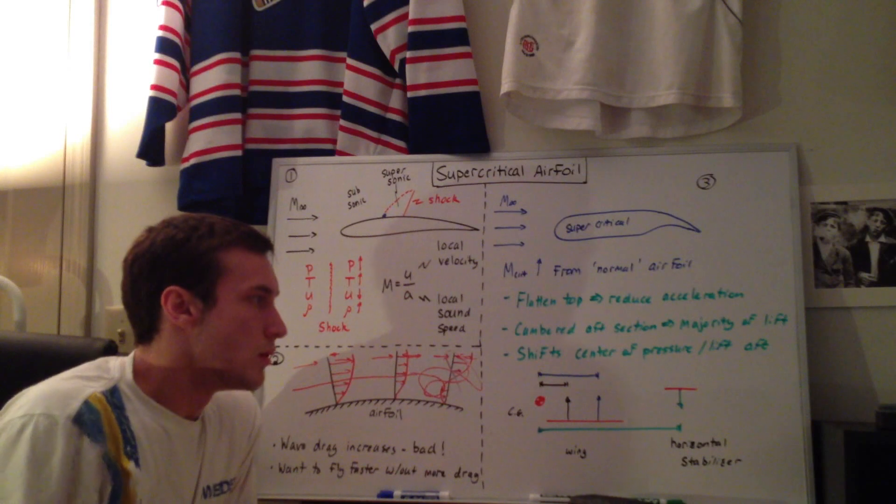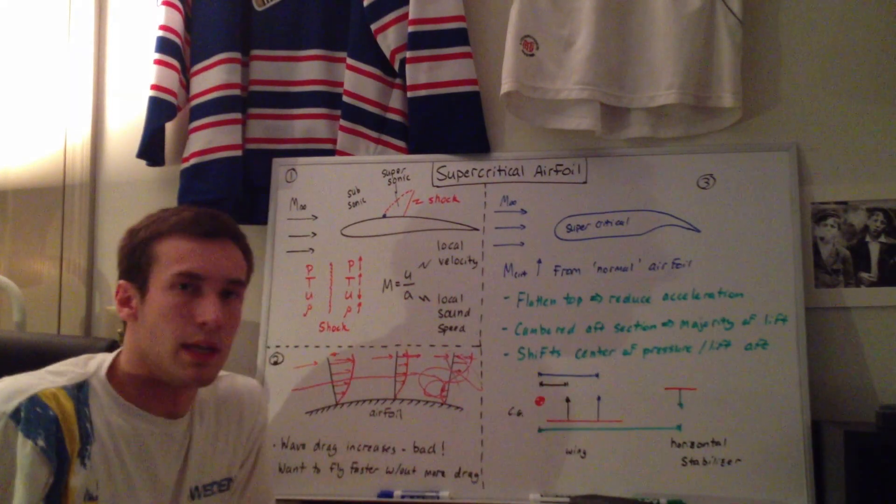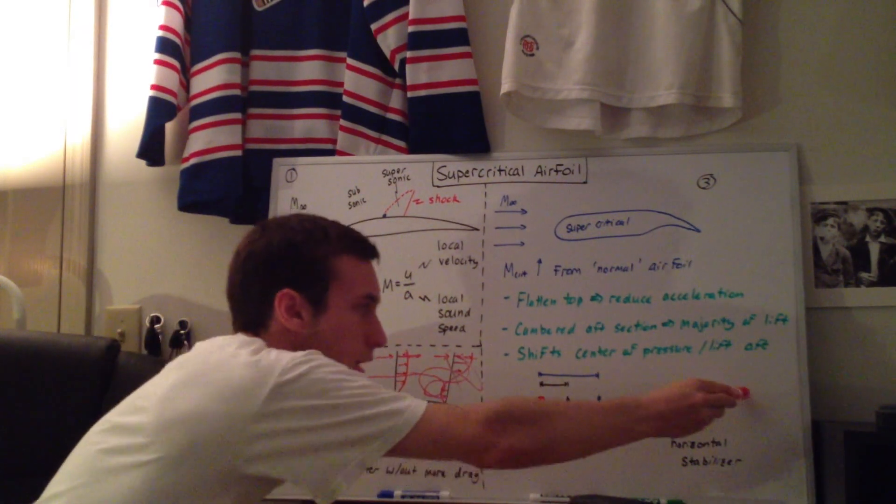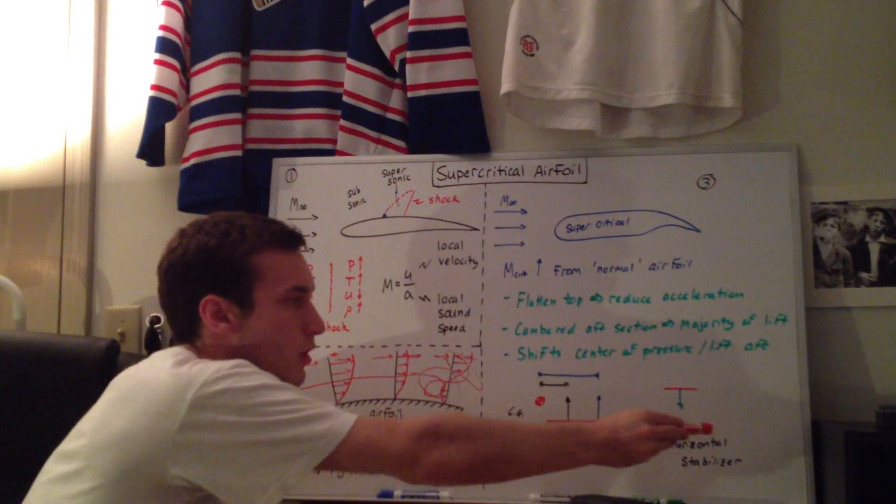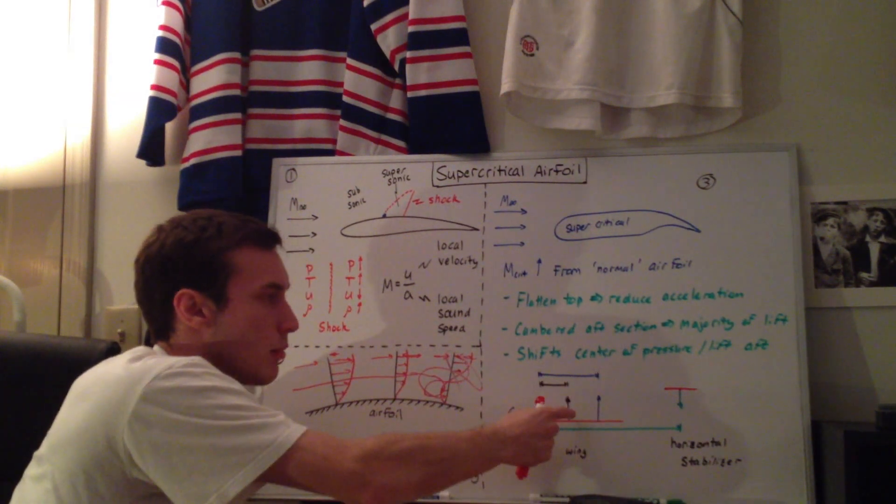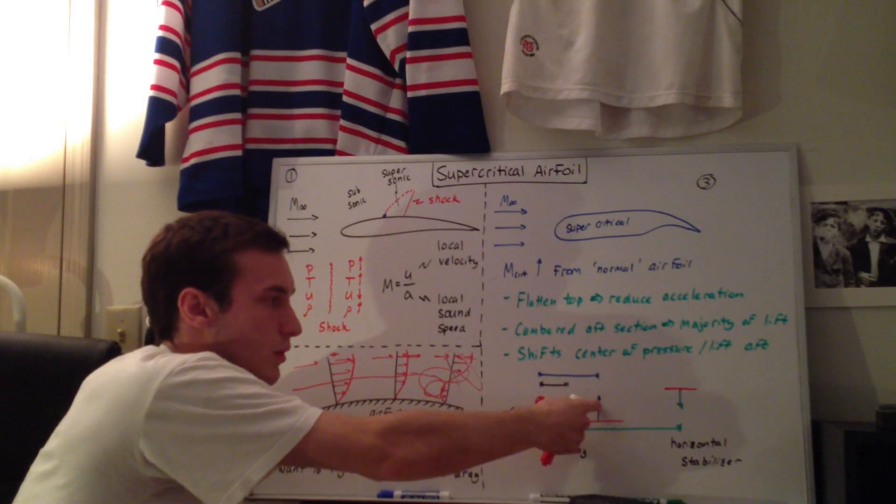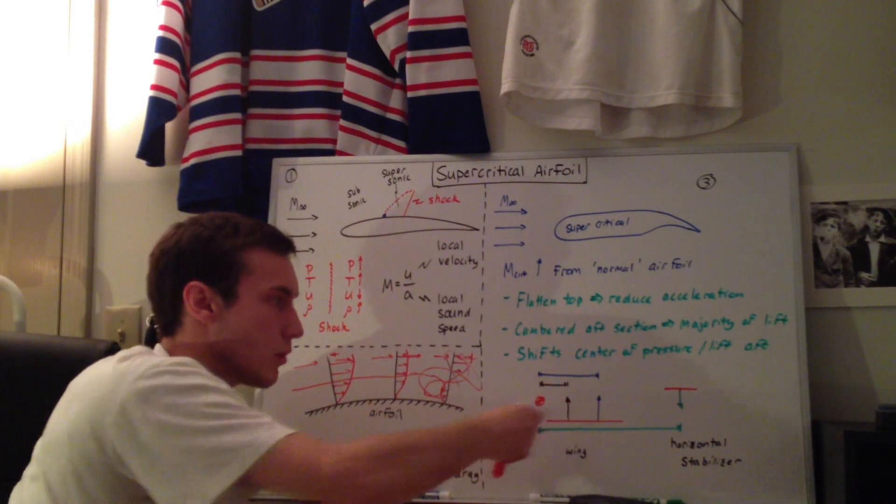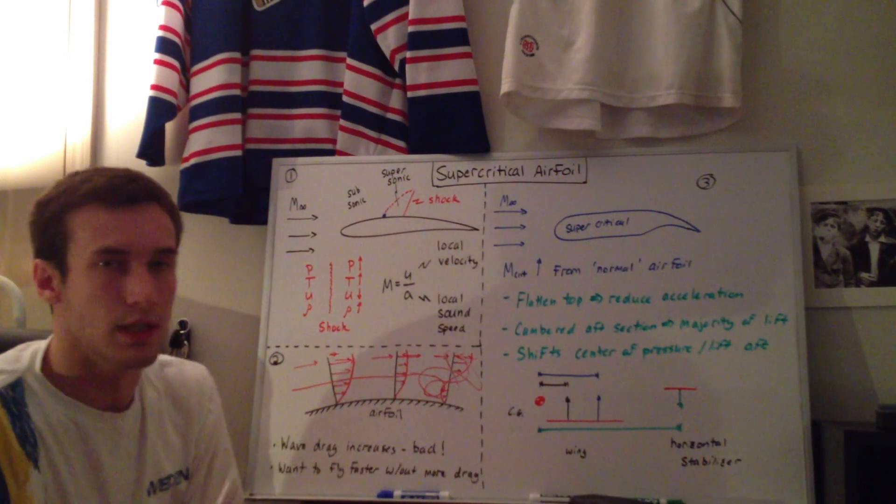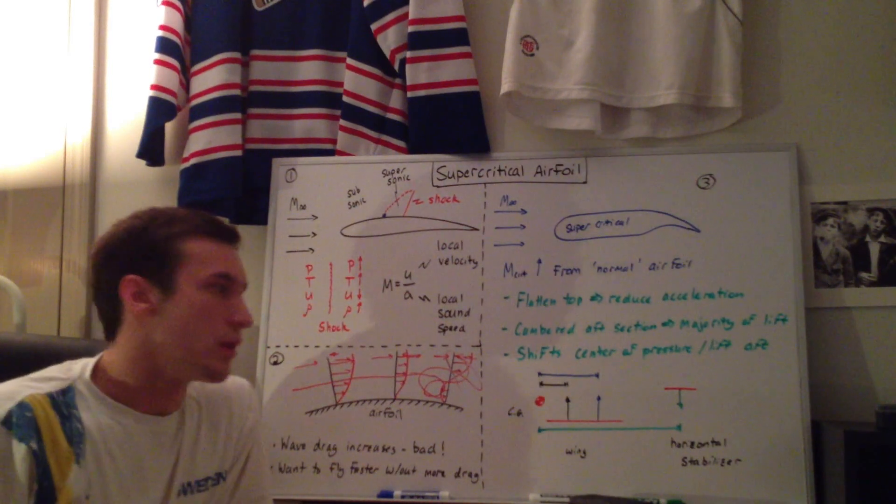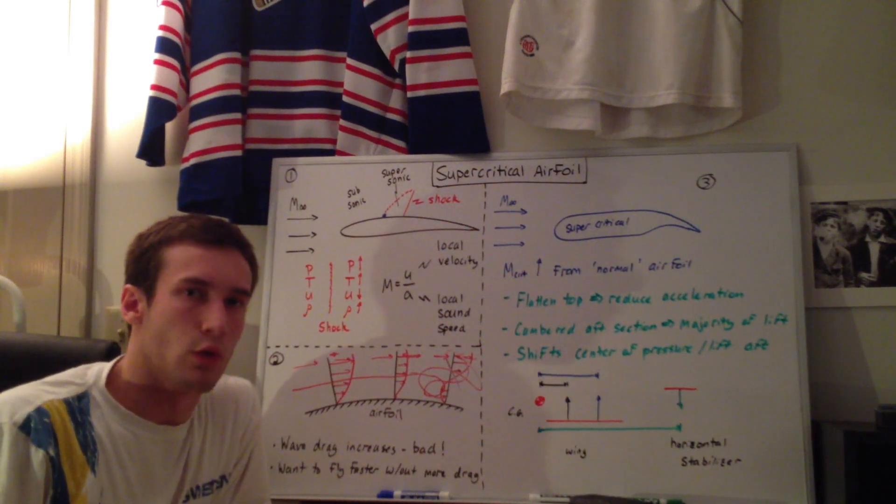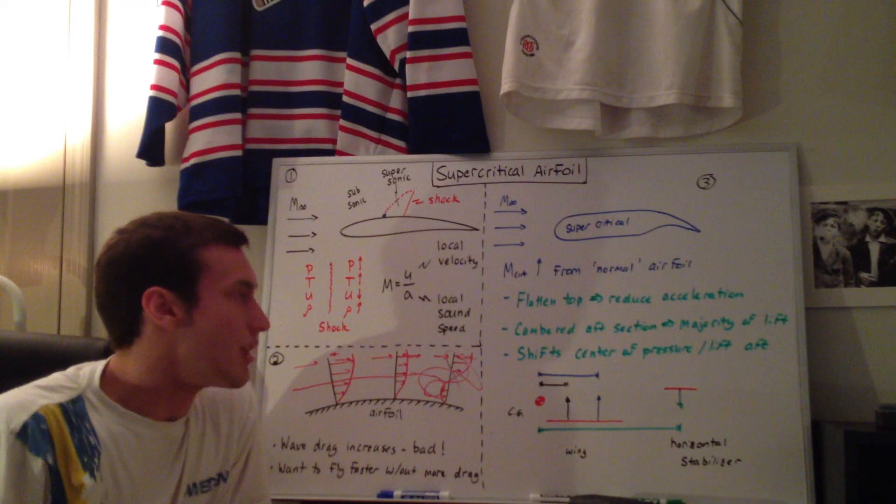So what you can do is you can either increase the area of your tail, increase the distance of the tail away from the CG to increase this moment arm, or you can move the whole wing up and get this resultant lift vector to act at the same point where this was before and relative to the CG. Lots of things change in terms of the overall aircraft configuration.